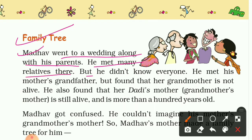Madhav went to a wedding along with his parents and met many relatives there, but he did not know everyone. This may happen with everyone — when we go to a wedding function and meet our elders, we are unable to identify what the relationship is between them and us. Yes, it happens with everyone.